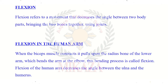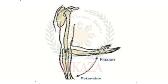The flexion of the human arm decreases the angle between the ulna and humerus. When the arm is fully extended, the angle is about 180 degrees. When we bring the arm into flexion, the angle becomes approximately 90 degrees. So in flexion, the angle between the humerus and ulna decreases. This bending process is called flexion.